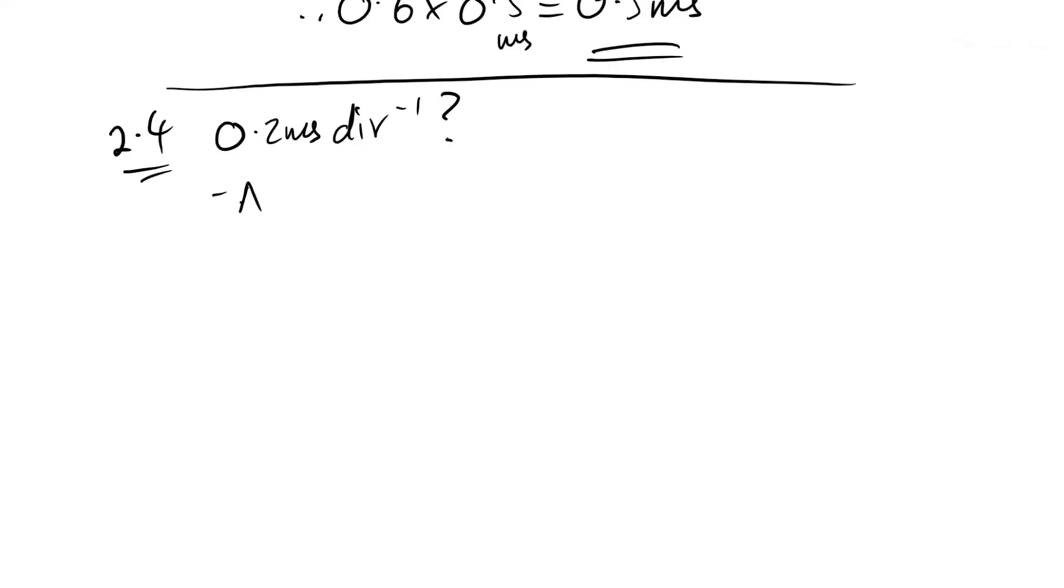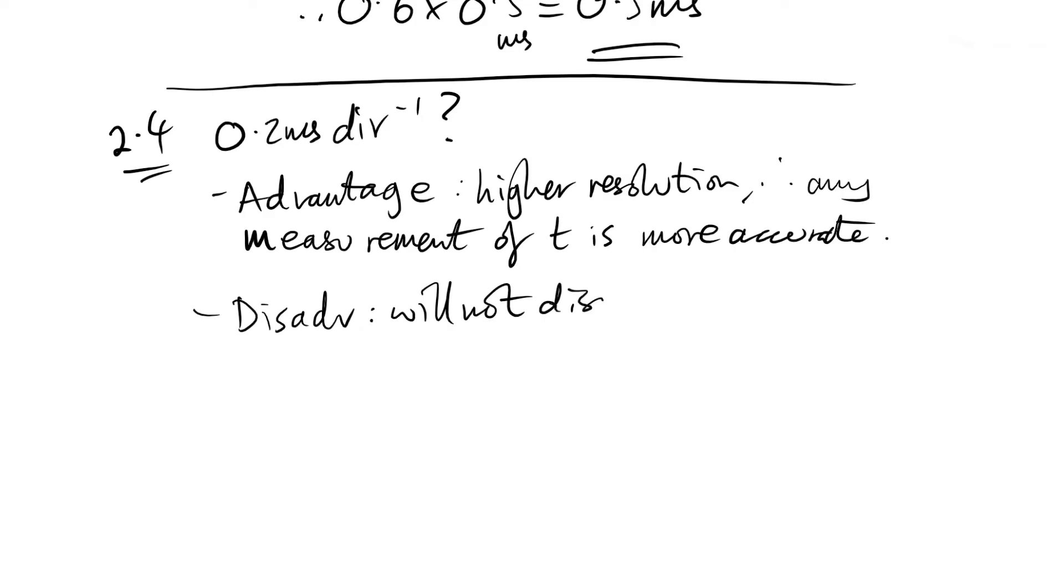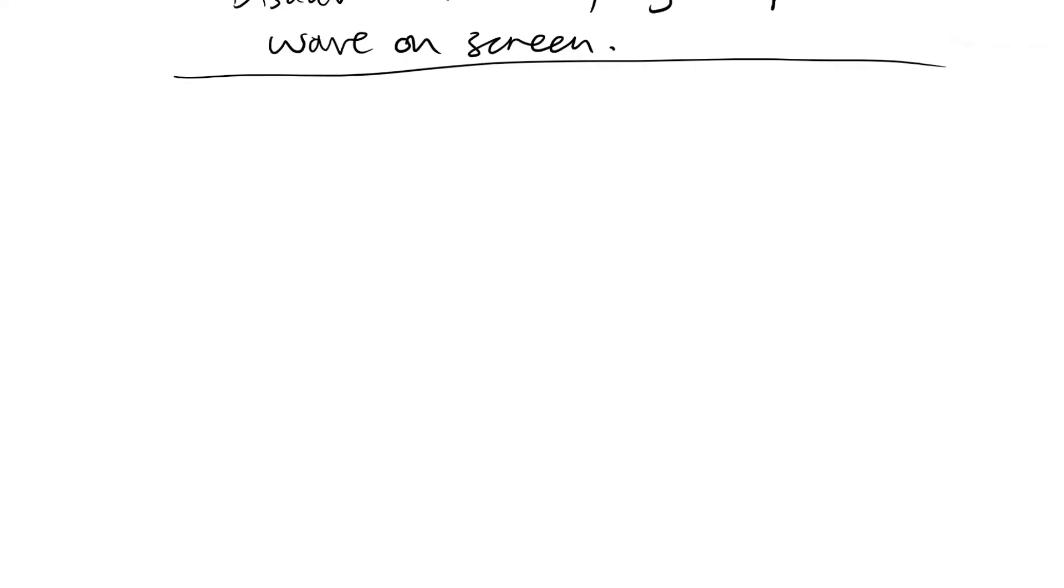Advantage: it's a higher resolution, therefore any measurement of time will be more accurate. However, if we make it 0.2, we won't be able to fit a whole wave on. Will not display one full wave on the screen. Sure, we could measure half a wave and double it, but it's always best to have one full wave so there's no chance of you being wrong.